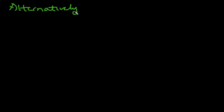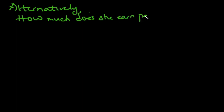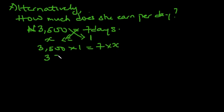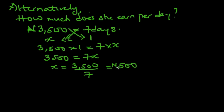Alternatively, here's a shorter method. How much does she earn per day? If she earns 3,500 naira in seven days, we set up: 3,500 over 7 equals x over 1. Cross multiplying gives 3,500 equals 7x, so x equals 3,500 divided by 7, which equals 500 naira per day.